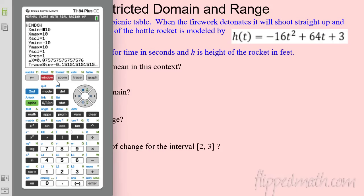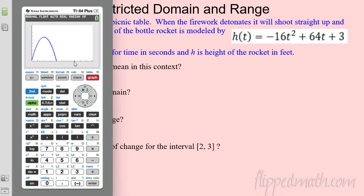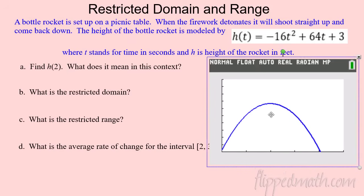The default window of negative 10 to 10 doesn't show the graph well, so let's adjust. For x (time), the minimum is 0 — negative seconds don't make sense. Set x-max to 10, y-min to 0 (height can't be negative), and y-max to 100, counting by tens. That gives us a nice picture. We can trim x-max down to 5 for an even cleaner view.